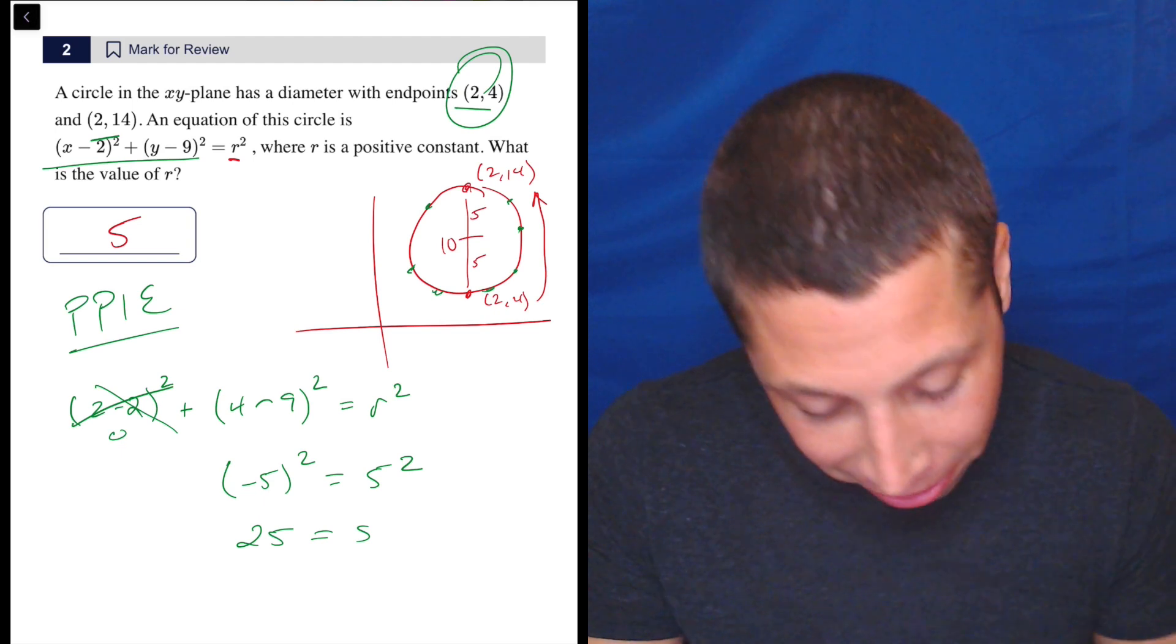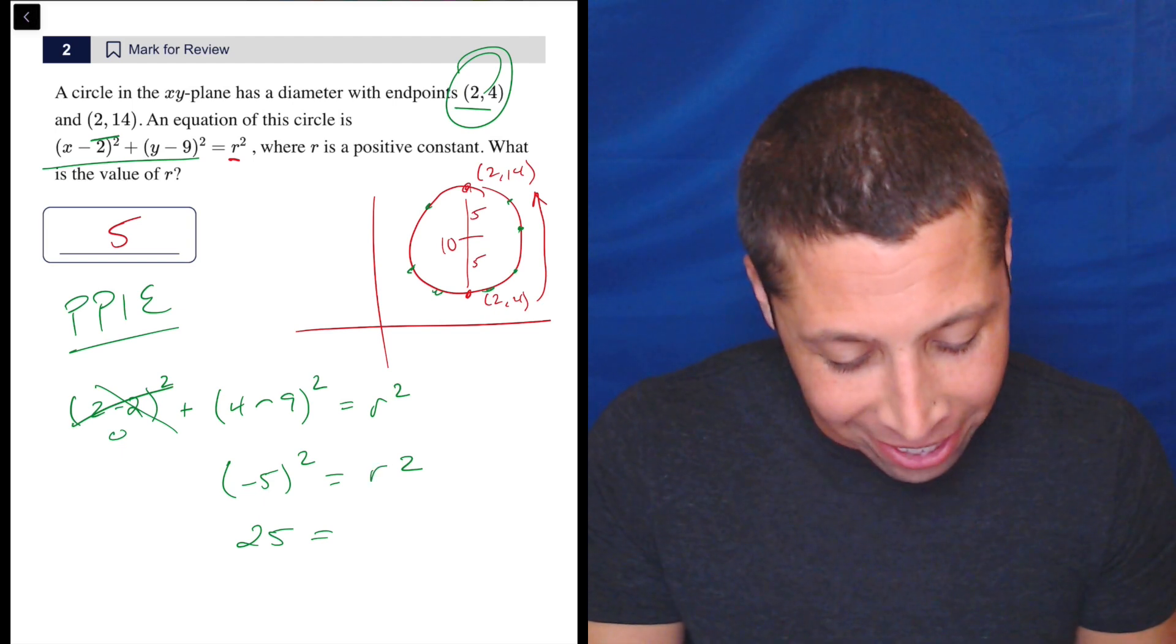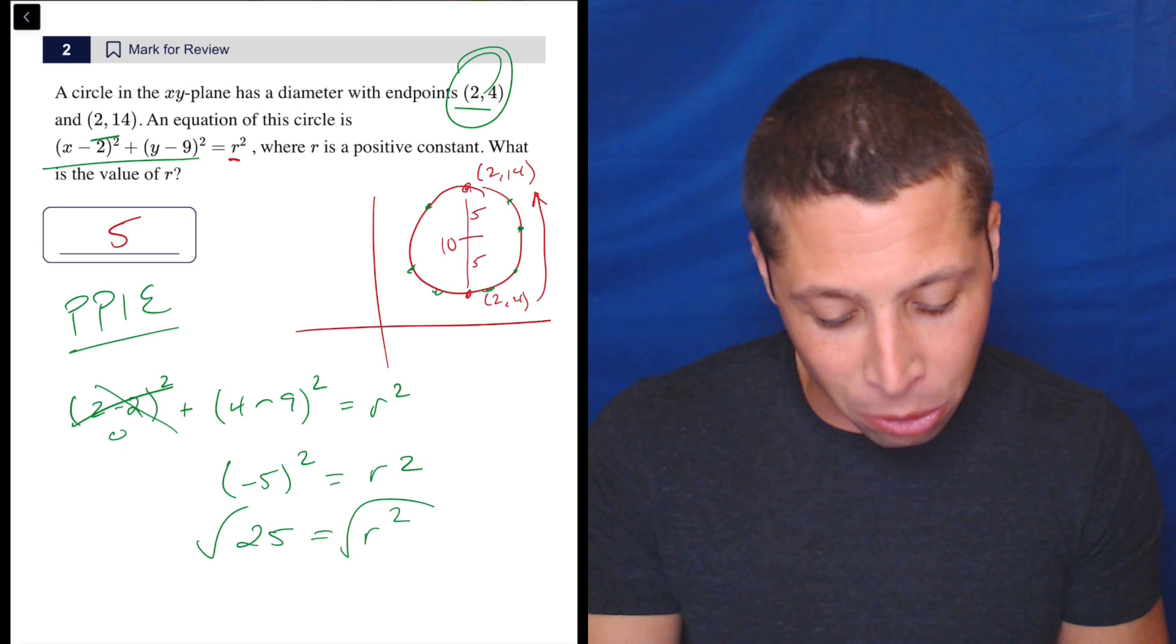So 25 is equal to, oh, I wrote 5 already. Look at that. I already anticipated the answer. So this is going to be 25 is R squared. And so now take the square root.